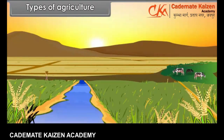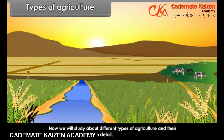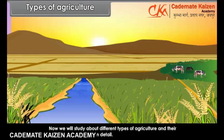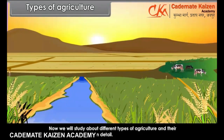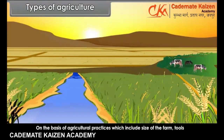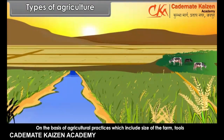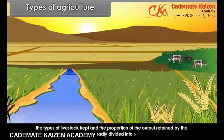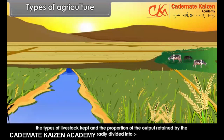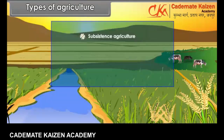Now, we will study about different types of agriculture and their characteristic features in detail. On the basis of agricultural practices, which include size of the farm, tools and techniques used, the types of livestock kept, and the proportion of the output retained by the farmer, agriculture may be broadly divided into subsistence agriculture and commercial agriculture.